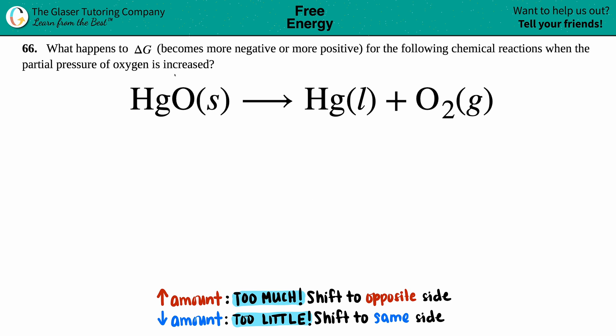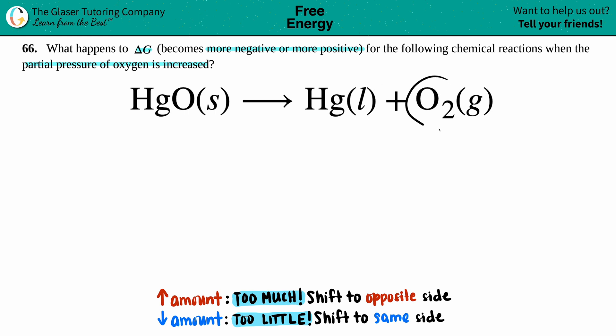Number 66. What happens to delta G — does it become more negative or more positive for the following chemical reactions when the partial pressure of oxygen is increased? Here we have the equation: HgO solid yields Hg liquid plus O2 gas.